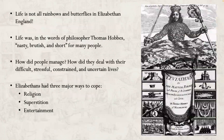As you've seen here, life was not all rainbows and butterflies in Elizabethan England. In the words of the famous philosopher Thomas Hobbes, life was nasty, brutish, and short for many, many people in this time. So how did people manage? How did people deal with their difficult, stressful, constrained, and deeply uncertain lives? They had three major ways of doing that: religion, superstition, and entertainment.